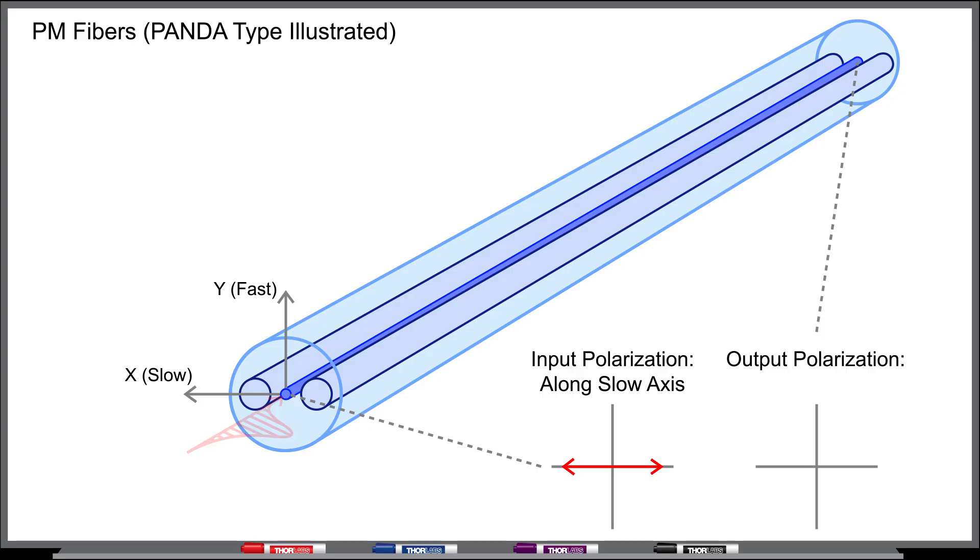To maintain the polarization state within the fiber, linearly polarized light must be coupled into just the slow axis or just the fast axis, so the light only interacts with the refractive index along a single axis. And the output linear polarization will be the same as the input linear polarization state under ideal conditions.